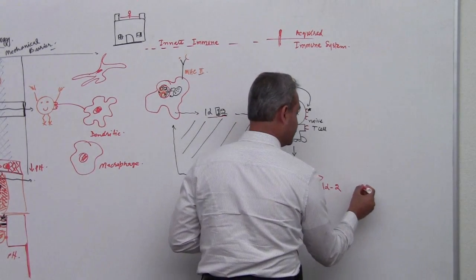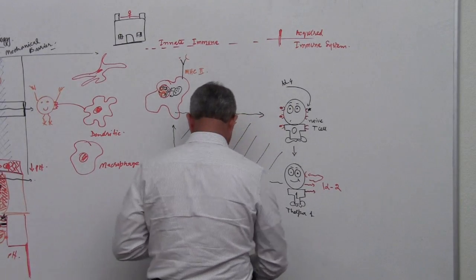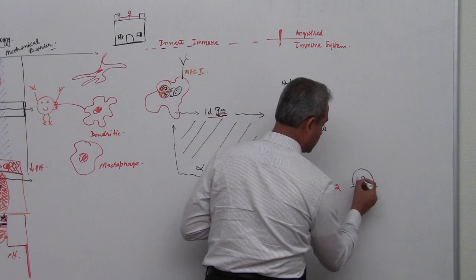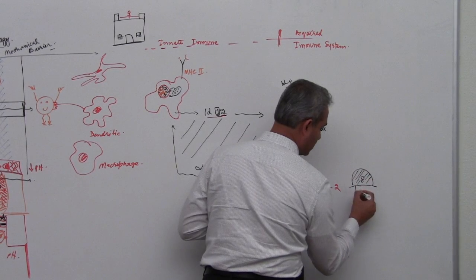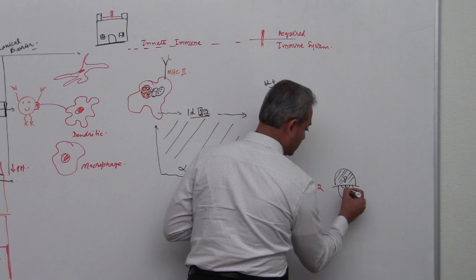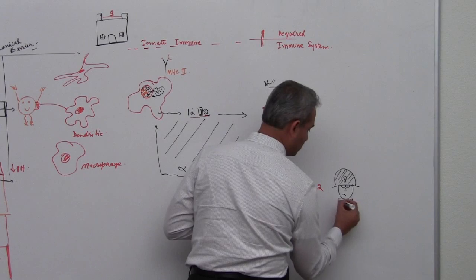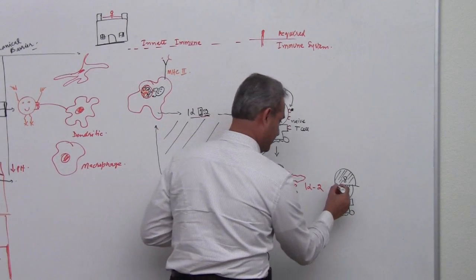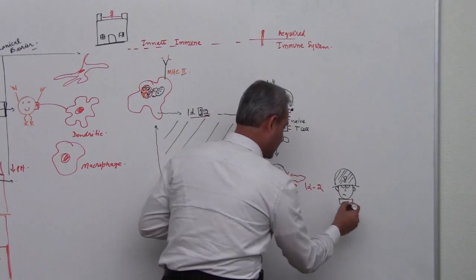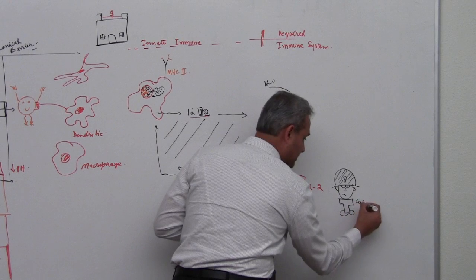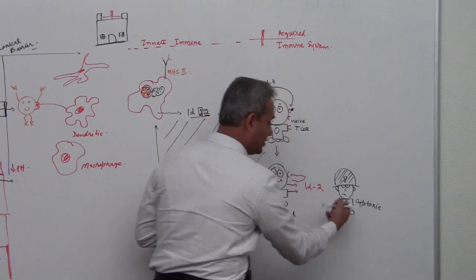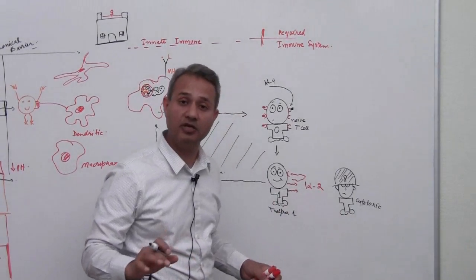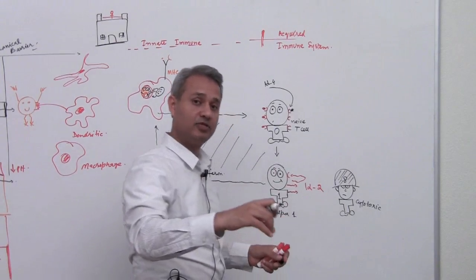Then another T cell sitting here. Here is a scary looking T cell - well he doesn't look that scary but anyways imagine that he's a scary looking T cell. You see he's wearing this helmet as well. He is a cytotoxic T cell. He's wearing a T as well.